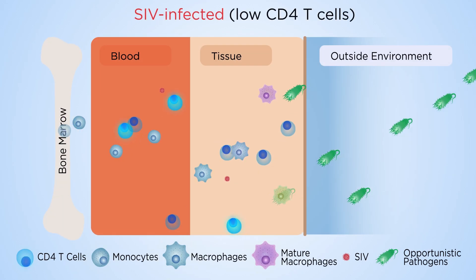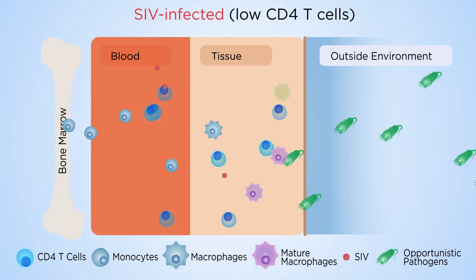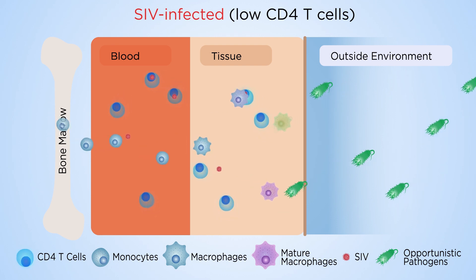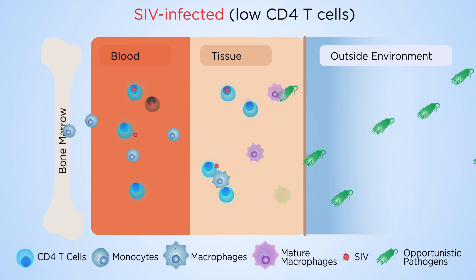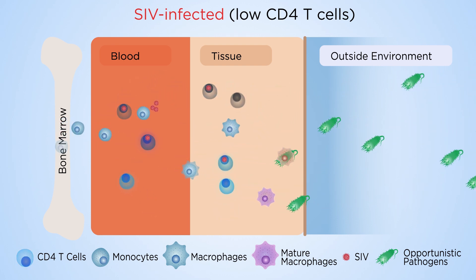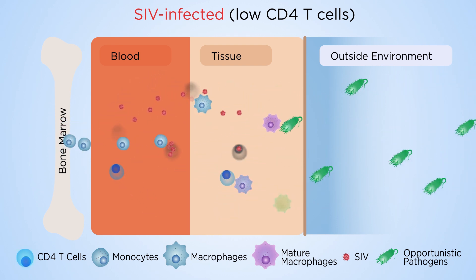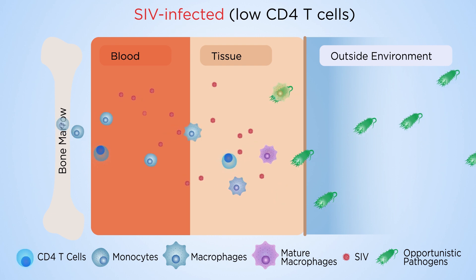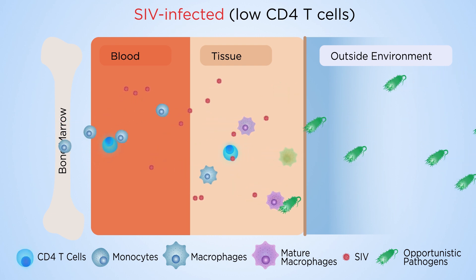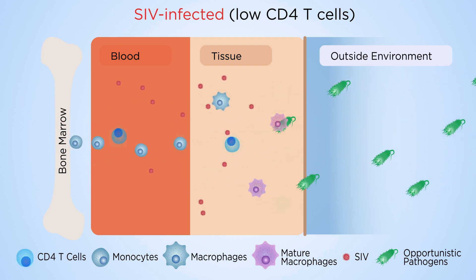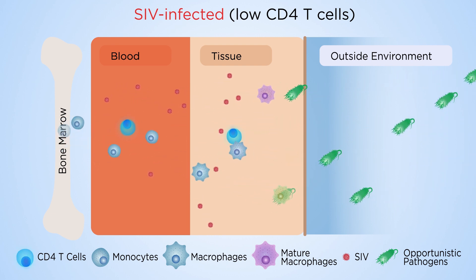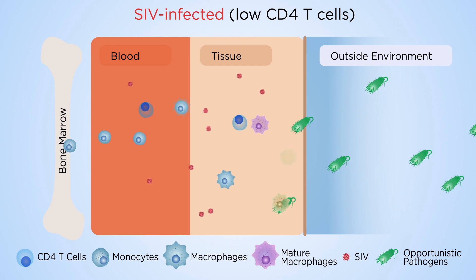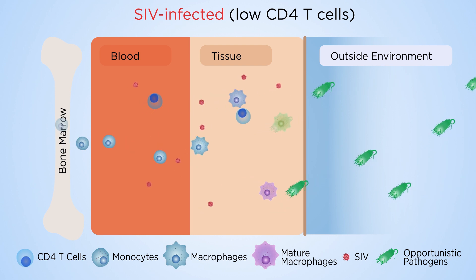In the early stages of HIV infection, CD4 T-cells become infected and die. These cells aren't effectively replaced, so the overall number of cells decreases, and macrophages become infected with HIV at a lower rate.